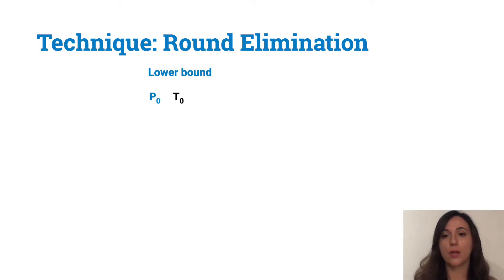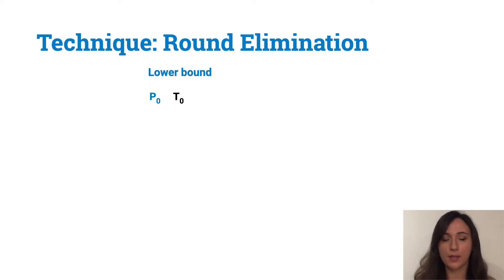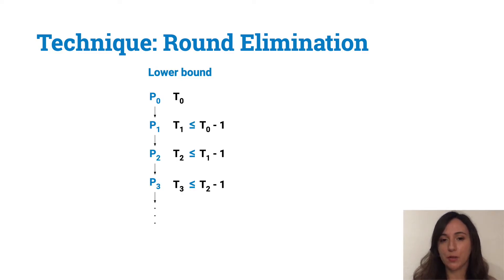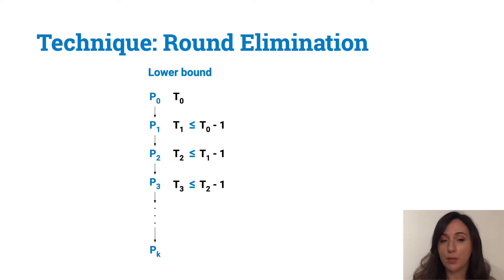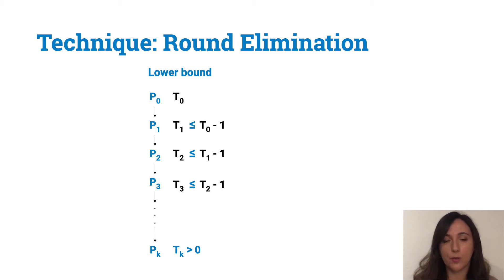The technique we use for showing our lower bounds is the so-called round elimination technique. Suppose we want to show a lower bound for our problem of interest, p0. What we do is start from p0 and create a sequence of problems p1, p2, and so on, such that each problem pi is at least one round easier than the previous problem in the sequence. If we are able to do this for k times, we get to a problem pk. And if we can show that pk cannot be solved in 0 rounds, then we get a lower bound of k plus 1 rounds for p0.